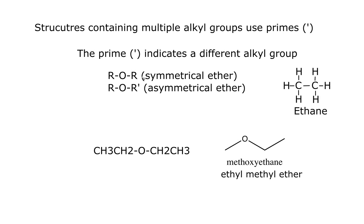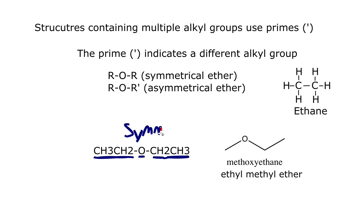ROR is a symmetrical ether. Look at this example here. We have the ether COC. If we look at each side of the oxygen, we have a CH2 connected to a CH3 on each side. They are symmetrical — they both have the same R group.